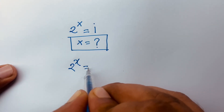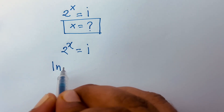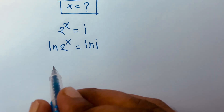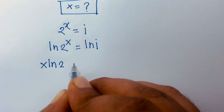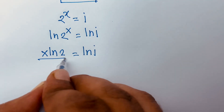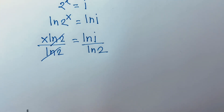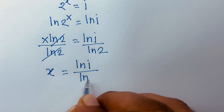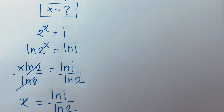I take the natural log of both sides, so I can say ln of 2 to the power x is equal to ln of i. According to our rules, the exponent moves in front, so it will be x ln 2 is equal to ln i. Dividing both sides by ln 2, we find x is equal to ln i over ln 2. But what is ln i?